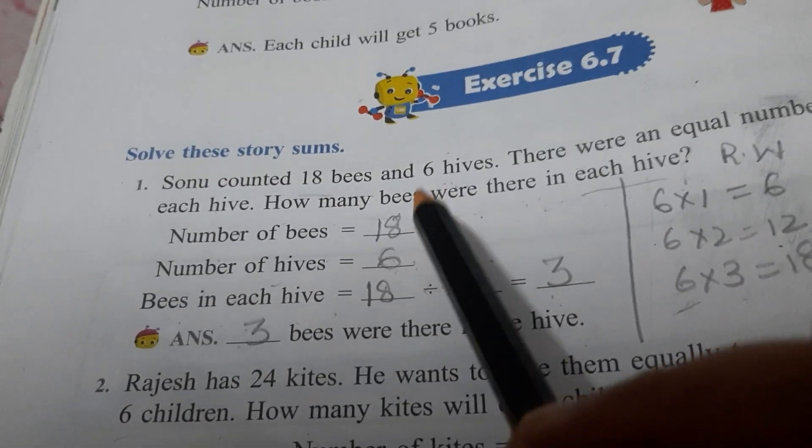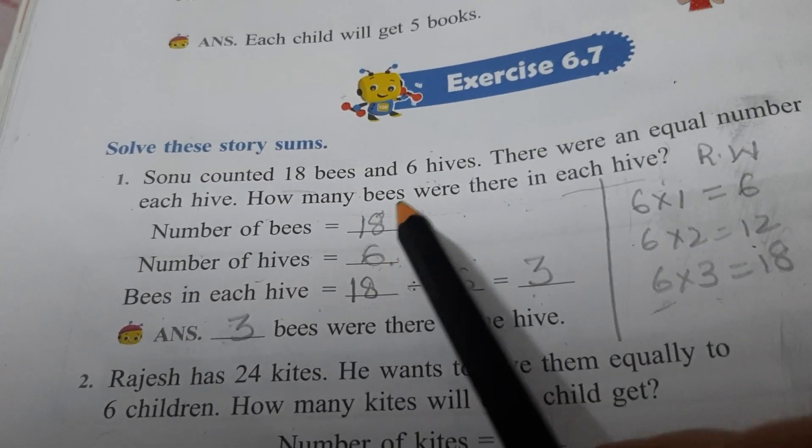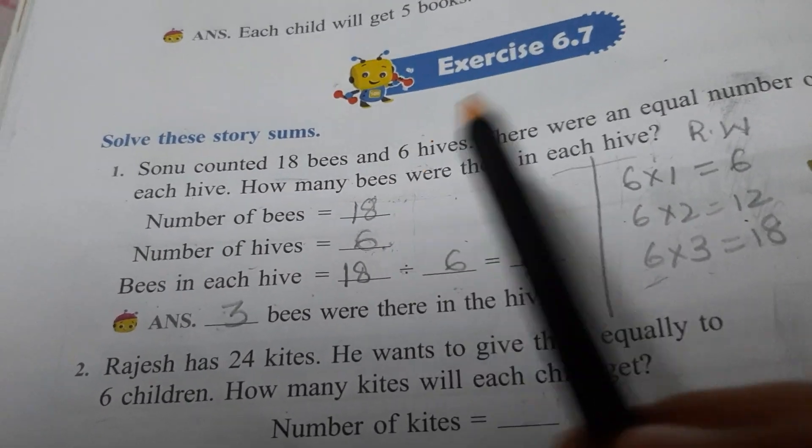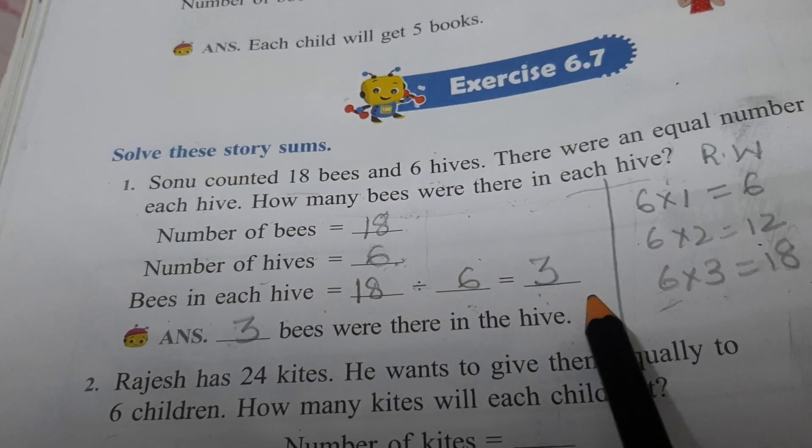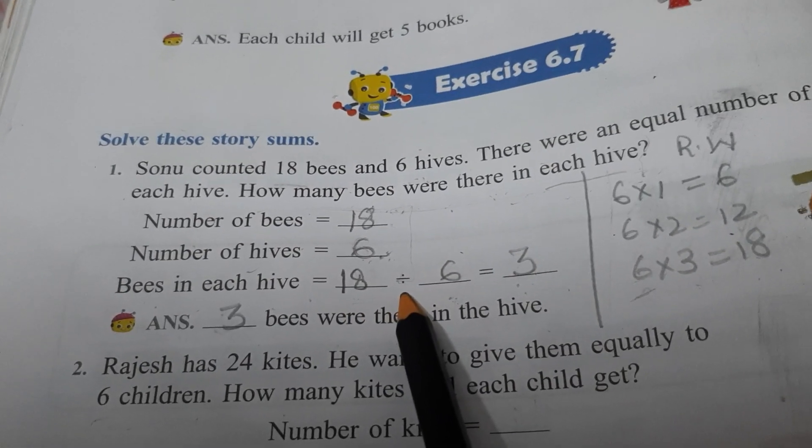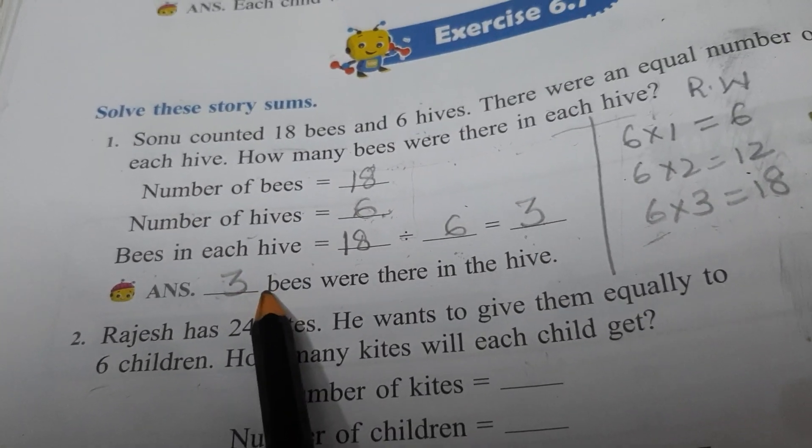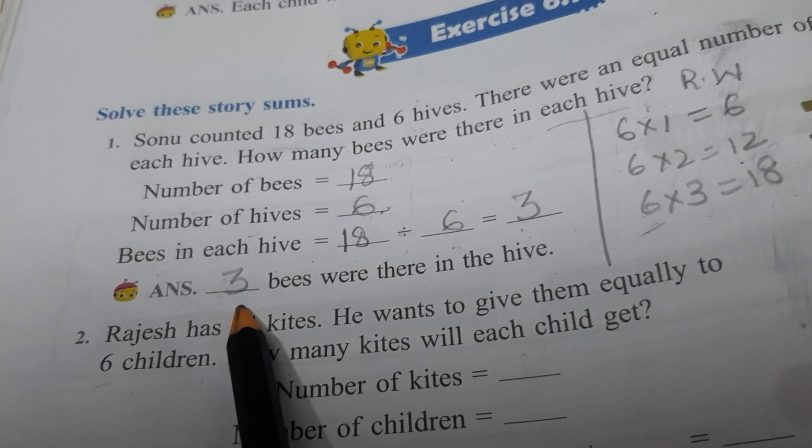So four lines are there. In first two lines, you will write which things are given. In third line, you will write what you have to find and you will solve it by using division operation. Then in fourth line, you will write the answer.